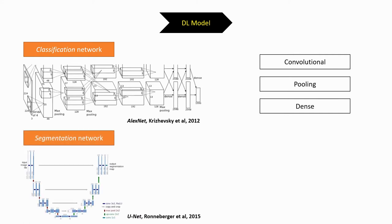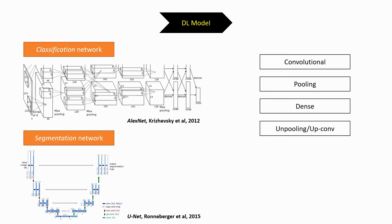Another famous network is the U-Net segmentation network, widely used in medical imaging and introduced in 2015. In between input and output, we also find convolutional and pooling layers, but no dense layers. Since we downsample with pooling and need an output the same size as the original image, we introduce unpooling or upconvolution layers that do the opposite of pooling. U-Net is also characterized by many skip connections, which reintroduce low-level but high-resolution features at later stages of the network, hopefully resulting in better resolution in the final output.